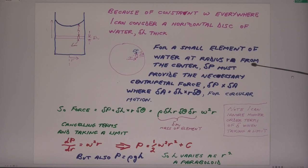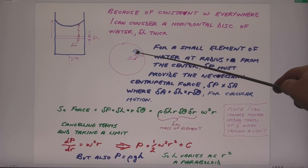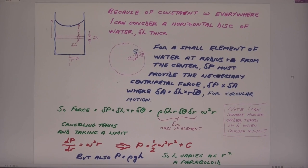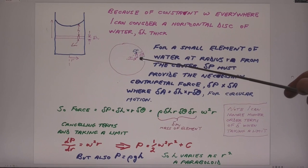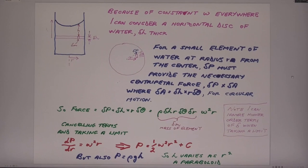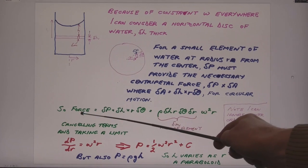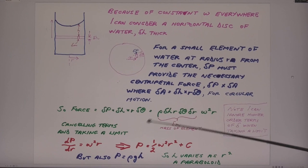So I say for a small element of water at radius r from the center, delta pressure, the pressure difference from the outer edge and the inner edge, must provide the necessary centripetal force for circular motion. So delta p times delta a, where delta a is delta h r delta theta, will give you the necessary force. I'm slightly simplifying, the keen amongst you will spot that is not rectangular, but when you actually do the limit, take the limit later on, it all sorts itself out, and the higher order terms in the calculus can be ignored.